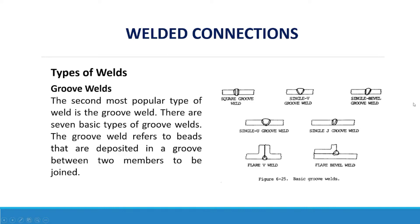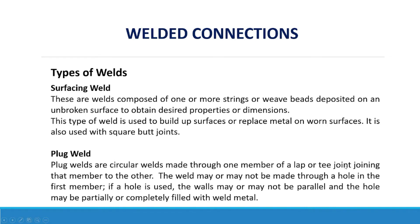Surfacing welds are composed of one or more string or wave beads deposited on an unbroken surface to obtain desired properties or dimensions. This type of weld is used to build up surfaces or replace metal on worn surfaces. It is also used with square butt joints.